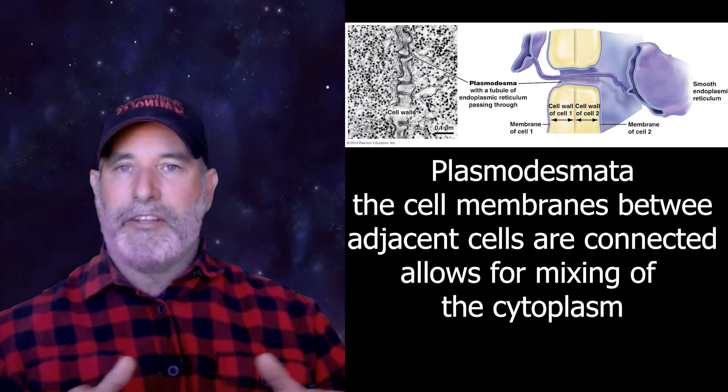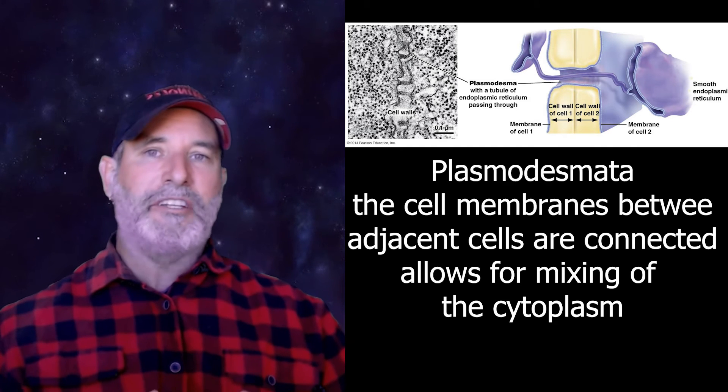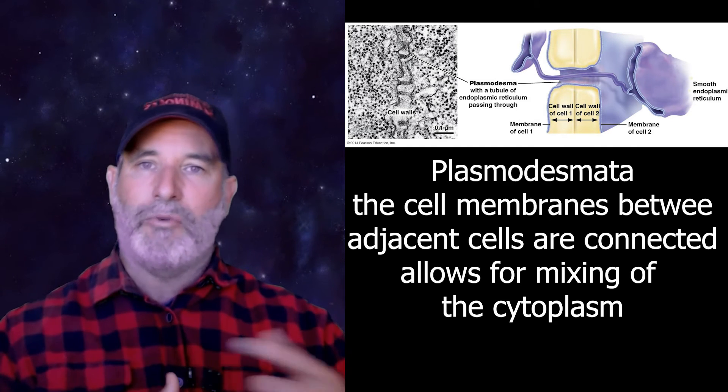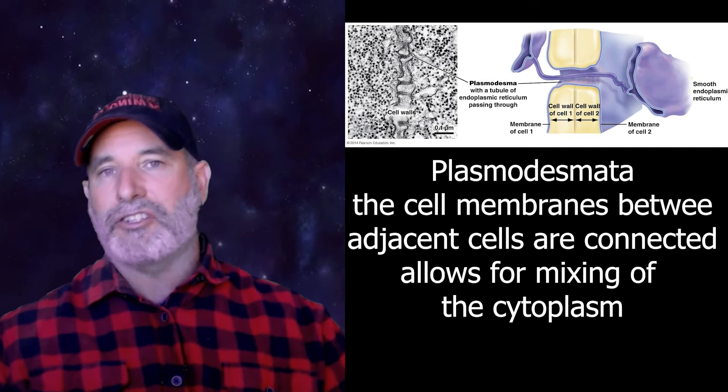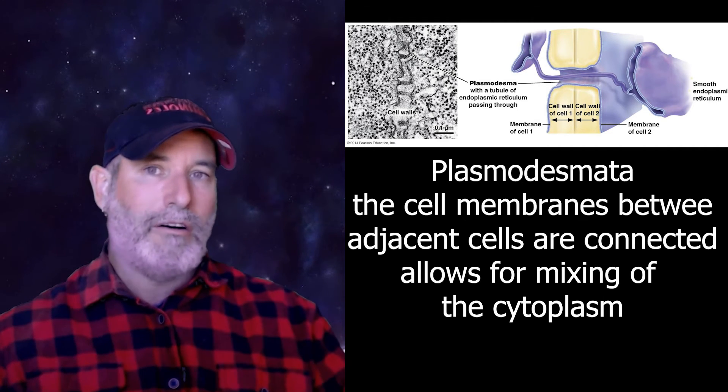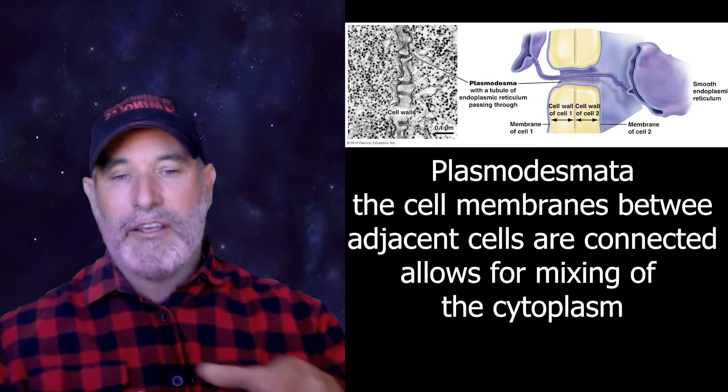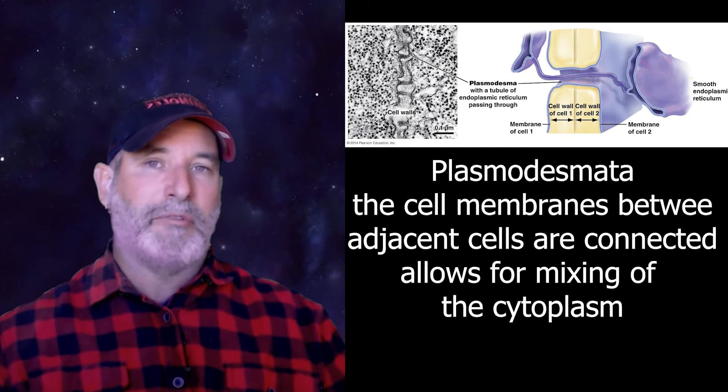And of course, plants do this a little bit differently. They have what is called a plasmodesmata. Now, a plasmodesmata is not a protein channel between these cells. Remember, plant cells are surrounded also by a cell wall. So the plant has to create a tunnel through the cell wall. And what they do is they literally connect their membranes through these holes. And those are called the plasmodesmata. And that allows for exchange of the cytoplasmic material between adjacent plant cells.